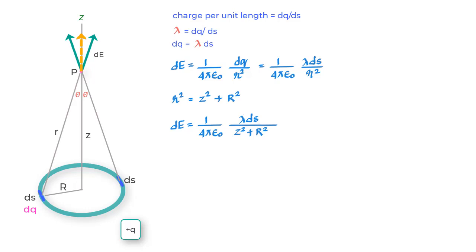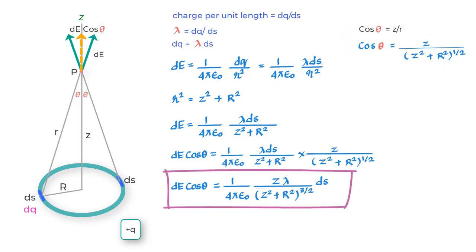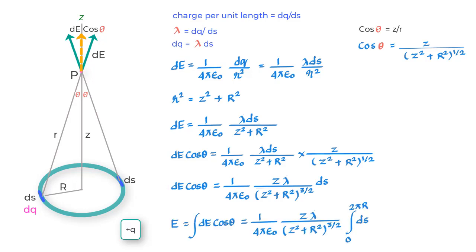The value of the vertical component is DE cos theta. If we take cos theta equals Z upon R, we get cos theta equals Z upon square root of Z square plus R square. So we can write DE cos theta as 1 upon 4πε₀ Z lambda upon Z square plus R square to the power 3/2 DS. Using integral calculus we sum up the contribution of each DS by integrating from S equals 0 all the way to S equals 2πR.